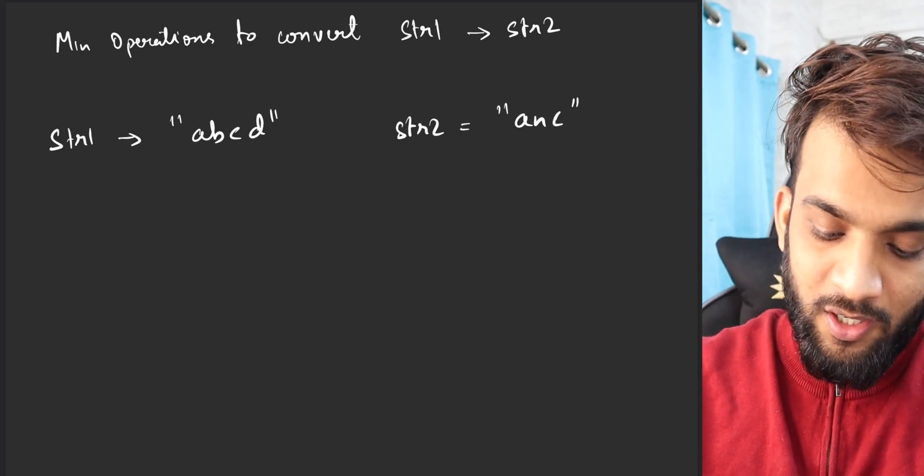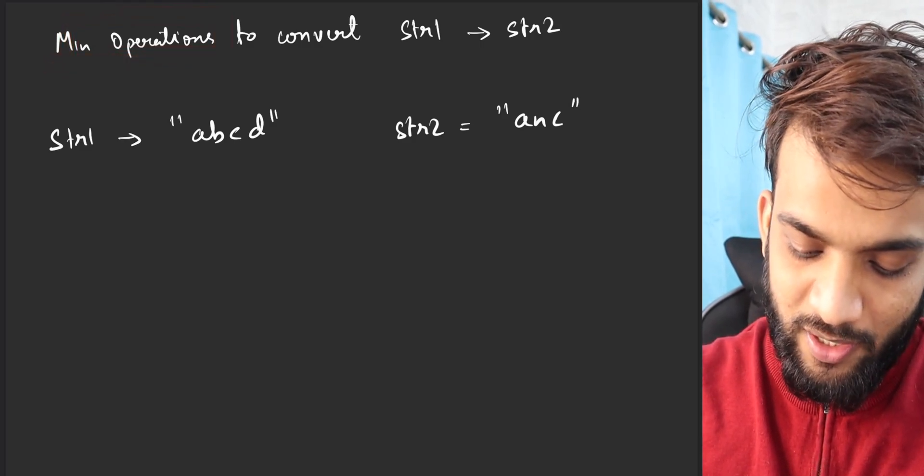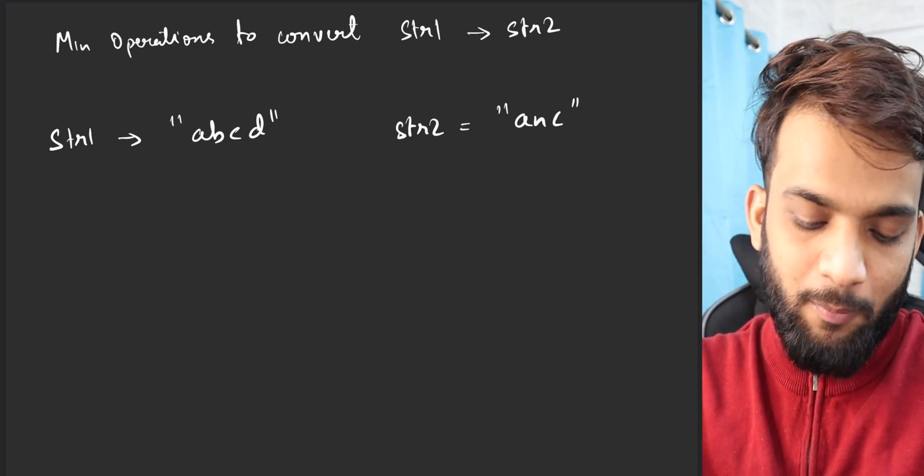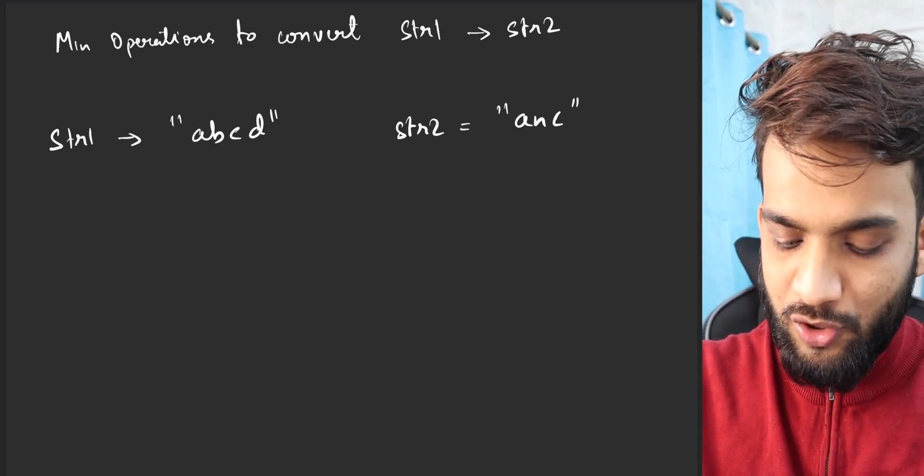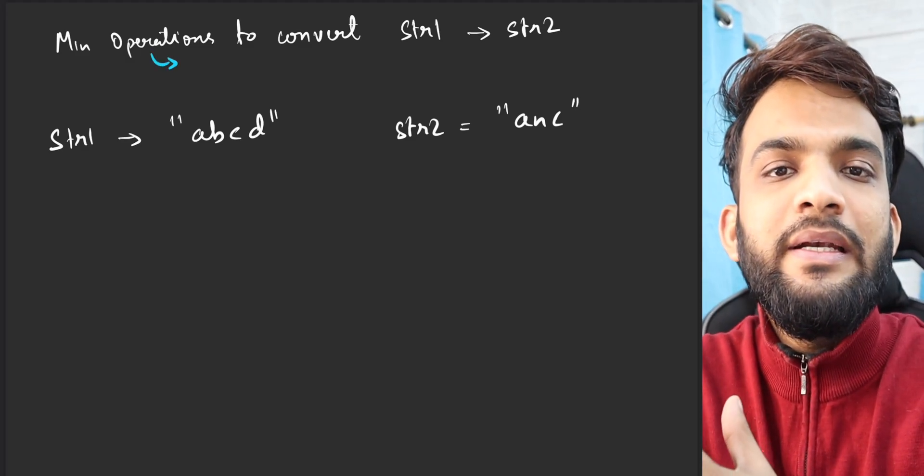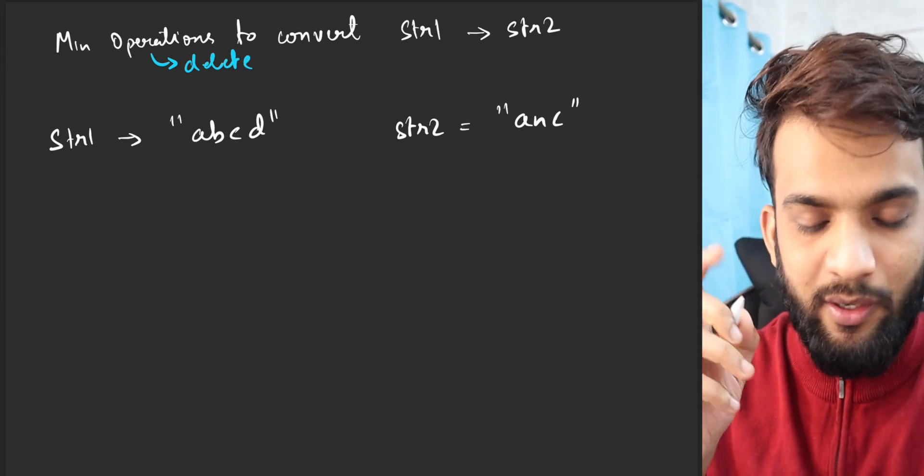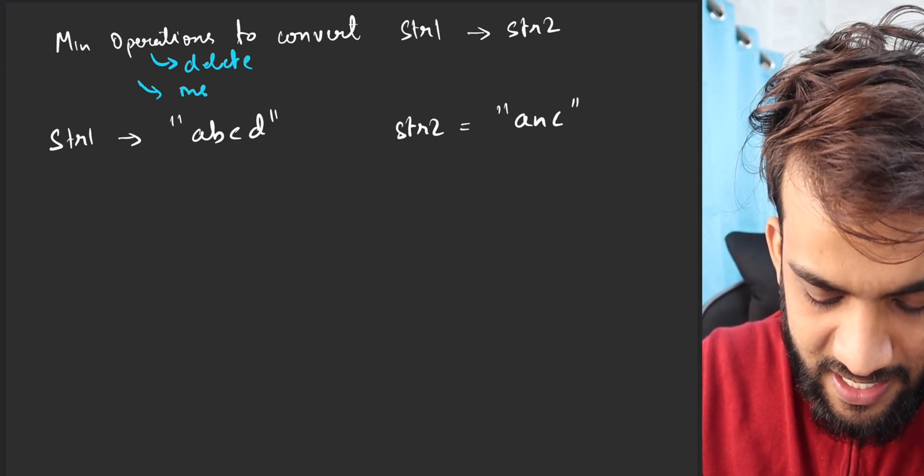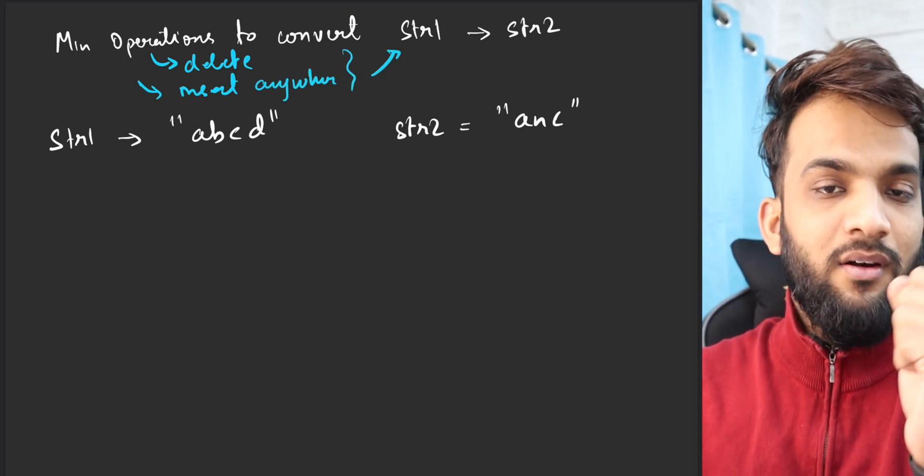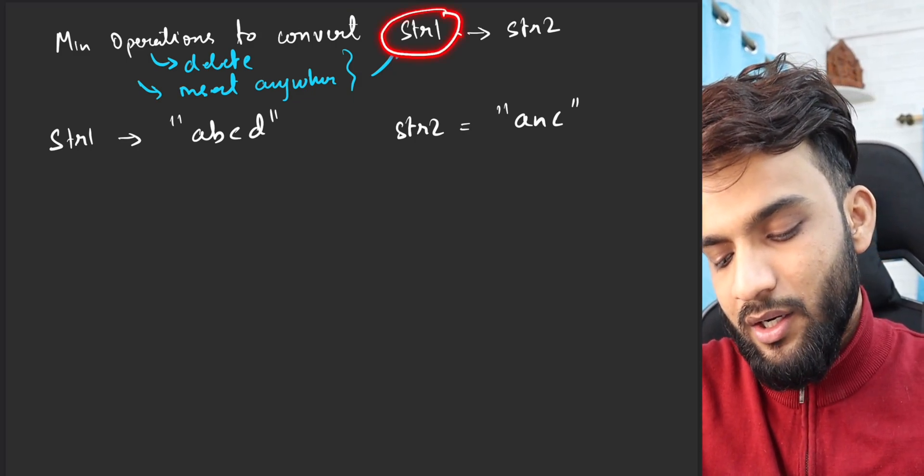Hey everyone, welcome back to Take You Forward. Today we'll be solving the problem: minimum number of operations to convert string one to string two. The problem states that you're allowed a couple of operations - you can delete any character in string one and insert anywhere in string one. By doing that, you have to convert a given string one to another string two.